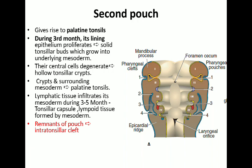During the third month of intrauterine life, the endodermal lining of this pouch will proliferate to form a solid structure called the tonsillar bud. The central part of this bud will then degenerate to form the hollow tonsillar cleft. The surrounding mesoderm will form the capsule, and lymphoid tissue will infiltrate into it to form the complete palatine tonsil.